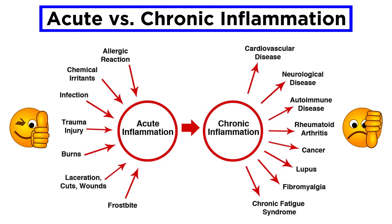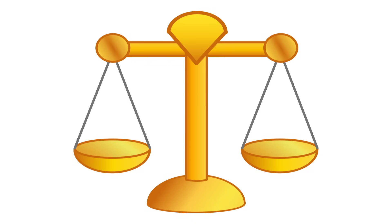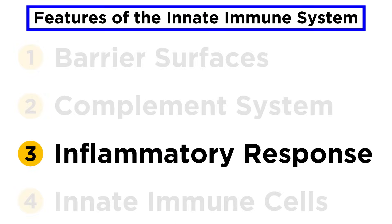Chronic inflammation can lead to extremely negative consequences like scarring or non-healing wounds and ulcers. A chronic inflammatory environment can also help promote cancer. Like everything else in immunology, or perhaps biology in general, the key is always balance. A balanced inflammatory response will be strong enough to contain and eliminate pathogens while resolving properly so that the tissue can heal and return to homeostasis. And that concludes an introduction to the inflammatory response.